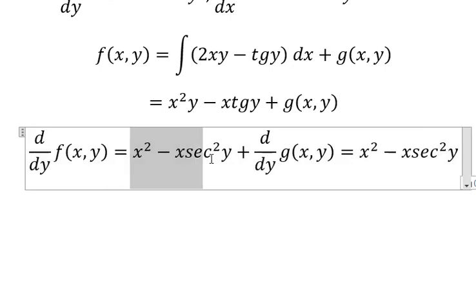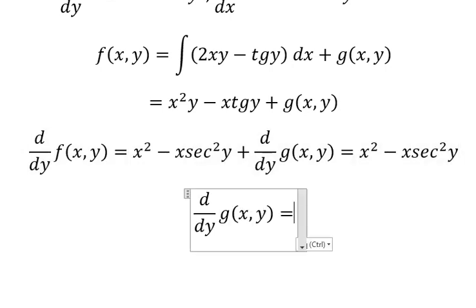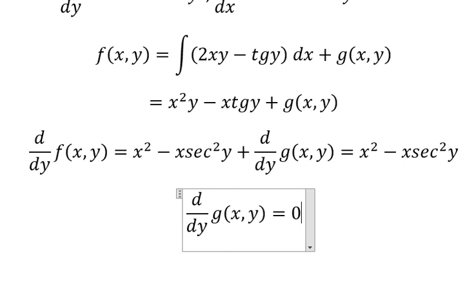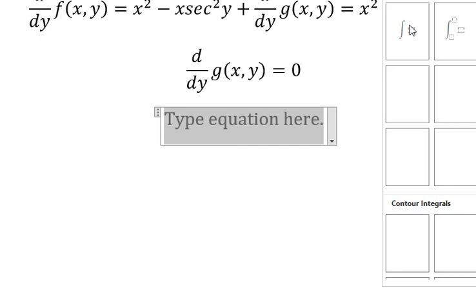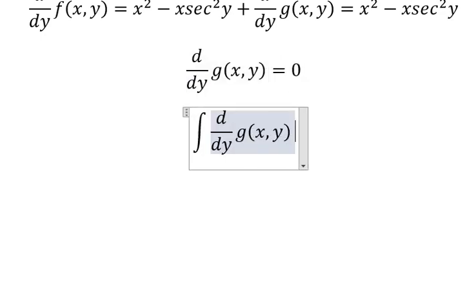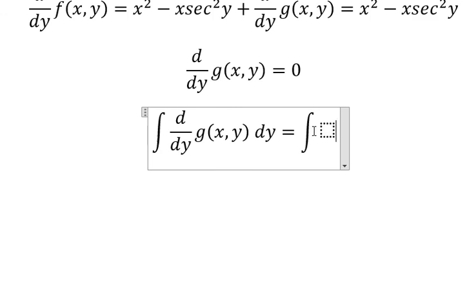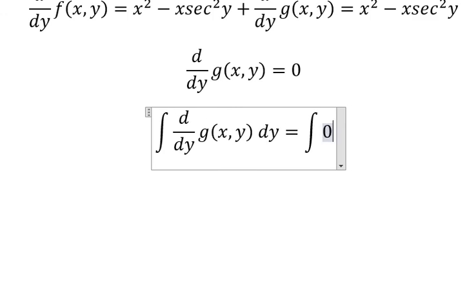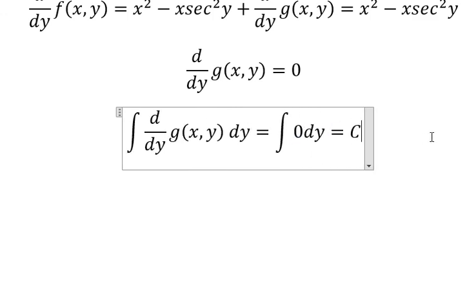Now we need to simplify both sides. So you get 0. Now we put the integration for both sides. The integration of this one, we have C.